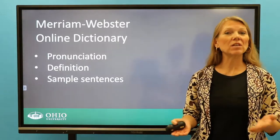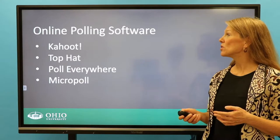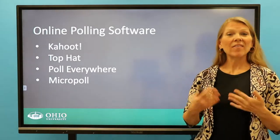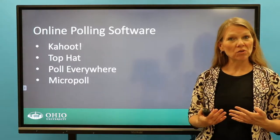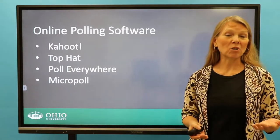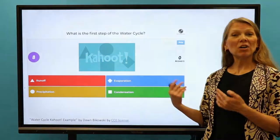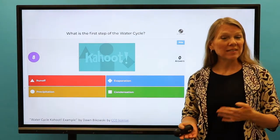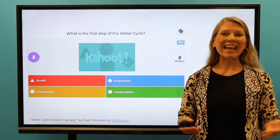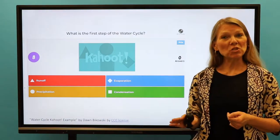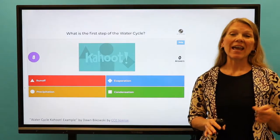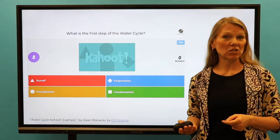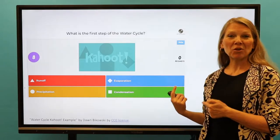For larger class sizes, try using free polling software such as Kahoot, Top Hat, Poll Everywhere, or Micropole for this section of the lesson. This software allows students to use their computers or mobile devices to ask and/or answer questions. In this example, a Kahoot question is used to review content from a previous class. Students use their phones, tablets, or laptop computers to answer these live polls. Just be sure that you have a computer with a stable internet connection and a projector, and that students have a reliable internet connection. They can answer questions individually or in groups.